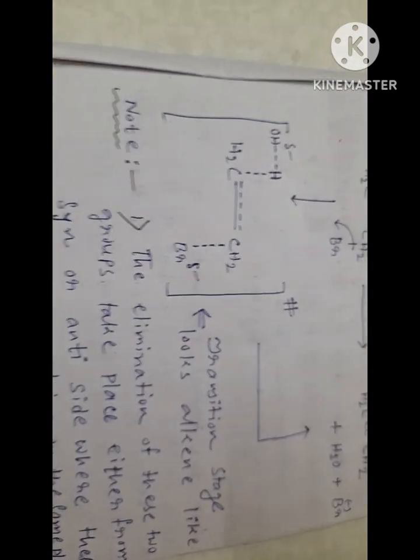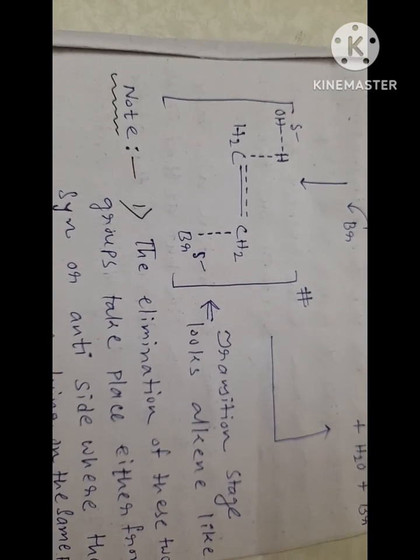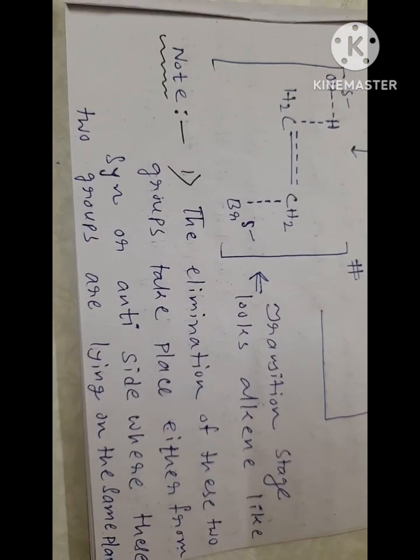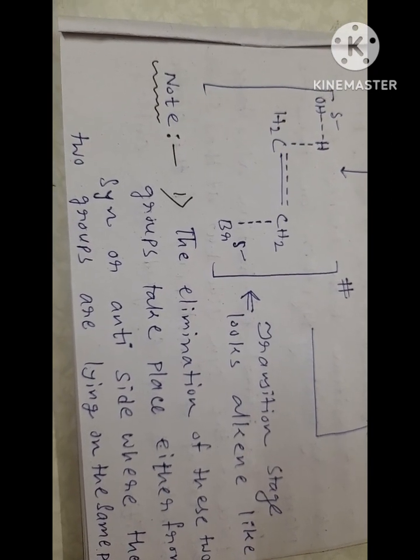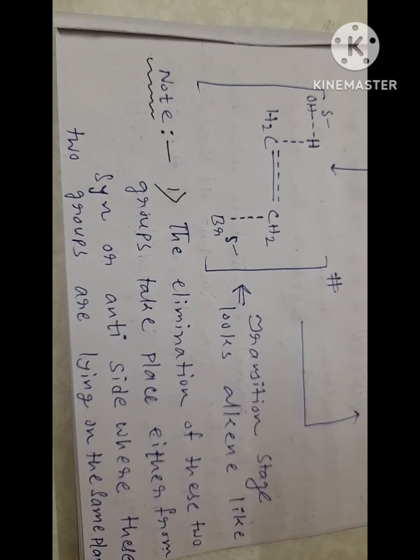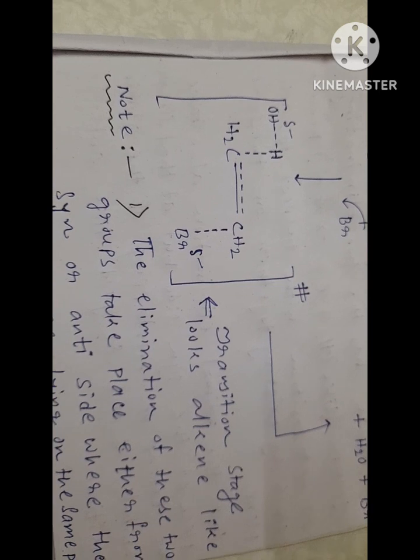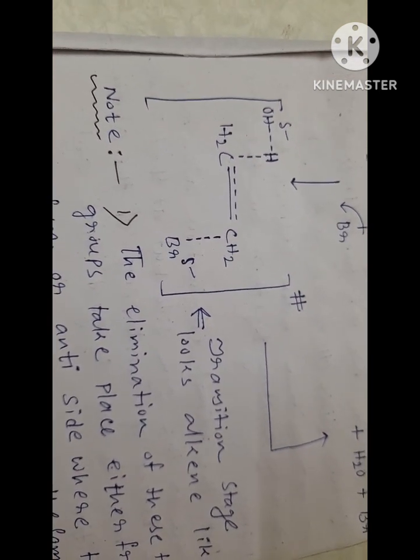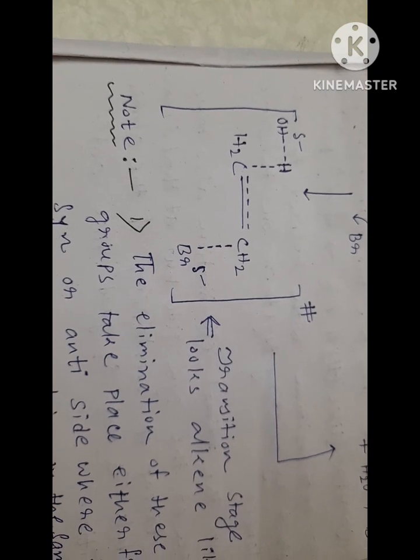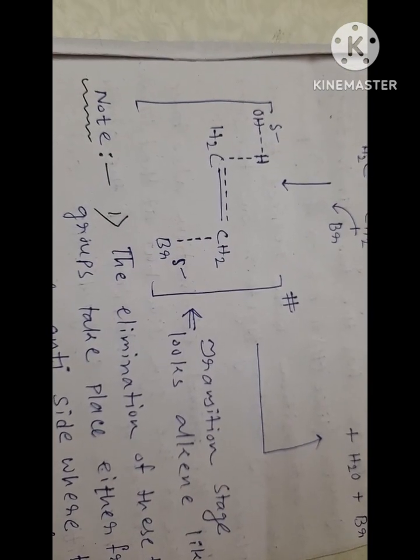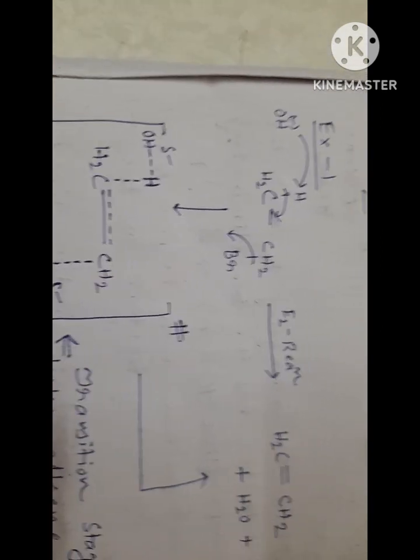But they are present either at anti position or syn position respectively. Why I have said this? Because if these groups are present at syn position, then the rate of elimination is not so good comparatively to anti position, because at anti position the orbital overlapping or effectivity is very strong comparatively than syn position.